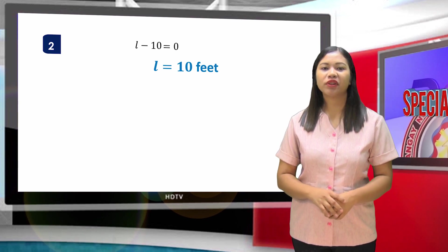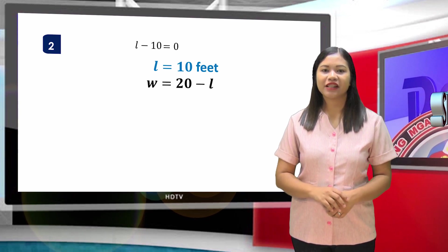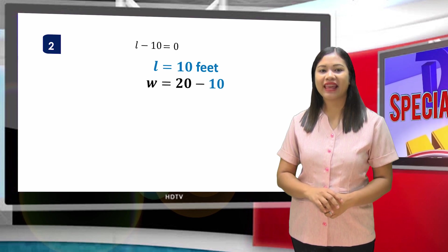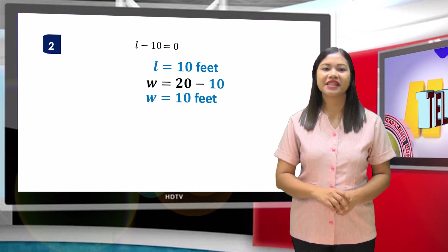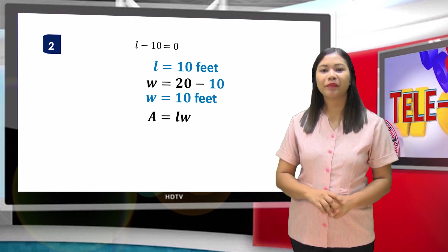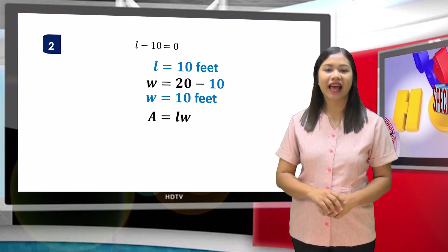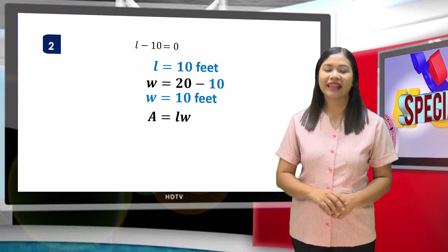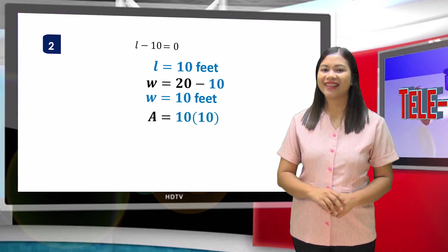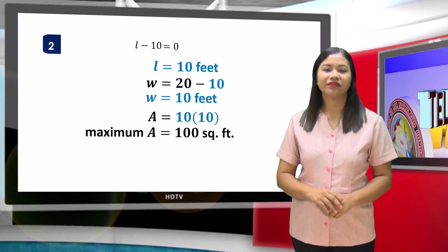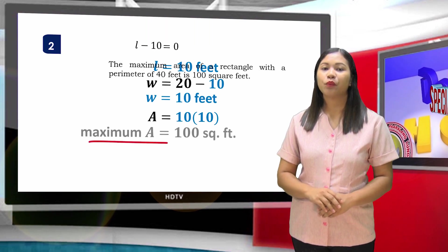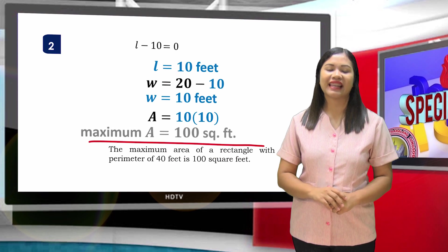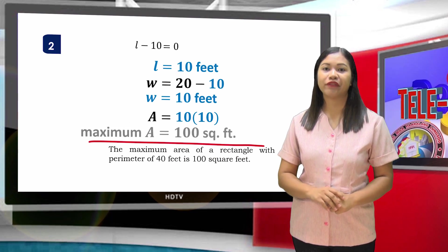Since W = 20 - L, so we will change this with 10. 20 - 10 = 10. Last step: since this is the formula in getting the area of a rectangle, we have to change length and width with 10 and 10. The product is 100. Therefore, the maximum area of a rectangle with a perimeter of 40 feet is 100 square feet.